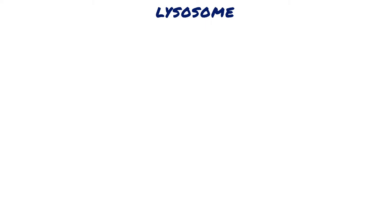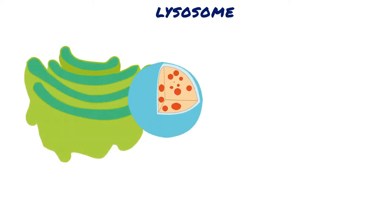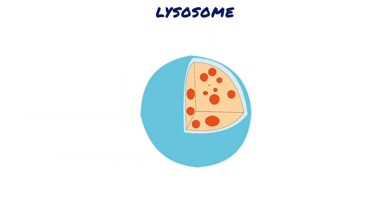A lysosome is a membranous sac of hydrolytic enzymes that an animal cell uses to digest macromolecules. The membranous sac is formed by breaking off from the Golgi apparatus and then dispersing throughout the cytoplasm.